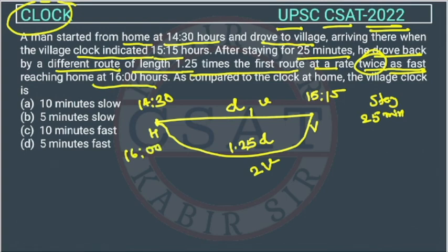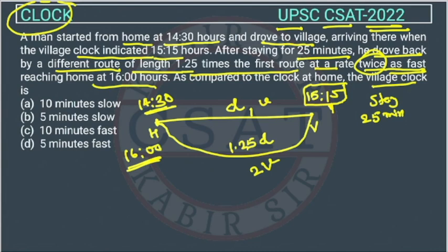He travels the return route at a speed twice as fast. Suppose the speed going was v, so returning he goes at 2v. He reaches home at 16:00 hours. The question asks: compared to the clock at home, is the village clock slow, fast, and by how much? The total journey time from 14:30 to 16:00 is 1.5 hours, which is 90 minutes.